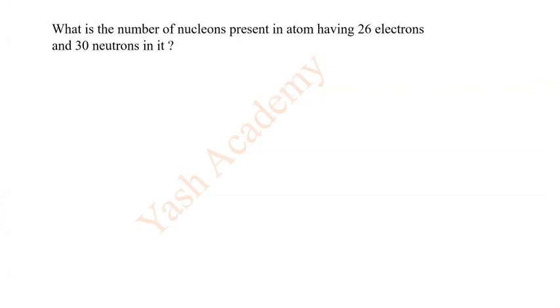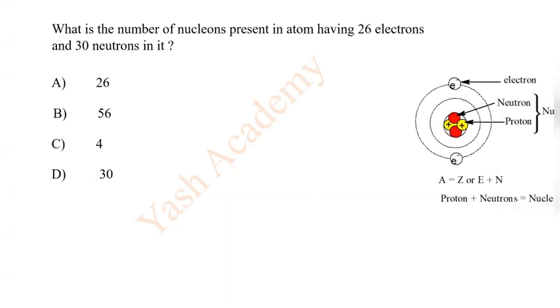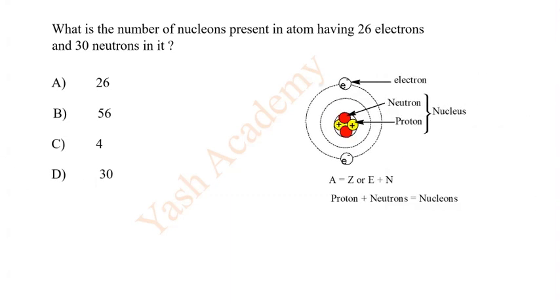What is the number of nucleons present in atom having 26 electrons and 30 neutrons in it? Options: A 26, B 56, C 4, D 30. With the diagram we can calculate the number of nucleons, that is protons plus neutrons. So B 56 is the correct answer.